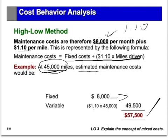So using the high-low method, we've broken a mixed cost into its fixed portion and its variable portion, and we can estimate the total cost at any level of activity. This is the high-low method, which you must be familiar with.